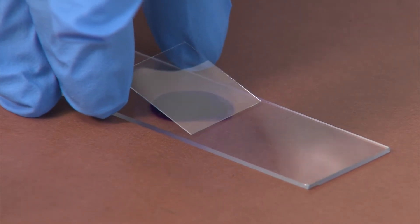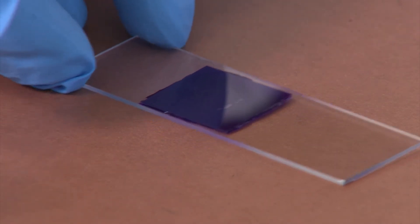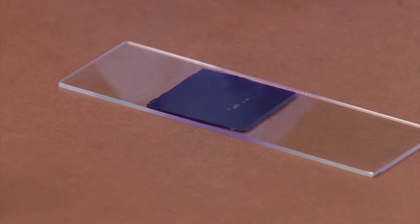Slowly lower the outer edge of the cover slip onto the sample. Be careful not to drop the cover slip or press down on it, as this could break the cover slip. If you need to, use a dissection needle to lower the cover slip edge.